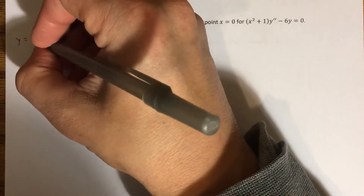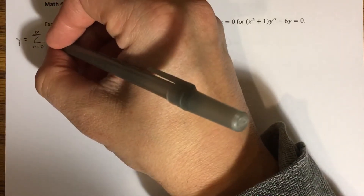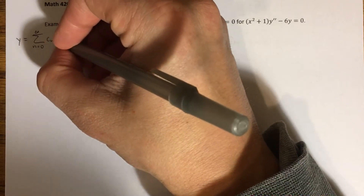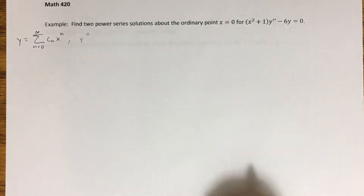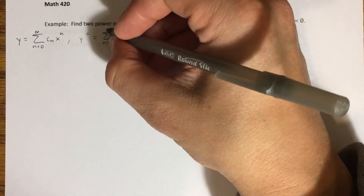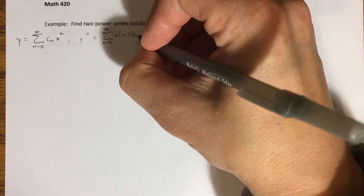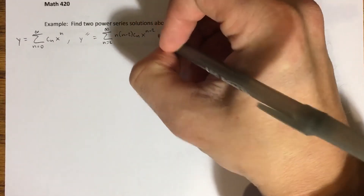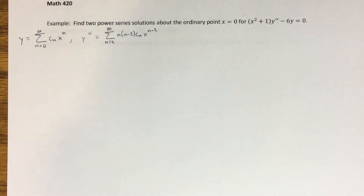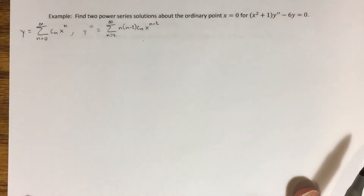So once again, y is going to look like the sum from n equals 0 to infinity of c_n x to the n. Notice there's no y' in this equation either, so I don't need to find that explicitly. y'' is going to look like the sum from n equals 2 to infinity of n times (n minus 1) times c_n x to the (n minus 2). And as before, we're going to substitute both of these into our equation.